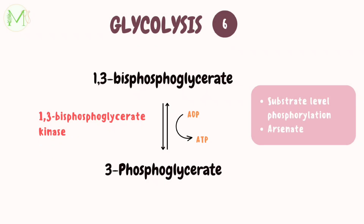In step 6, a molecule of ATP is produced by the energy trapped in the 1,3-bisphosphoglycerate with the help of bisphosphoglycerate kinase. This is an example of a substrate level phosphorylation reaction.